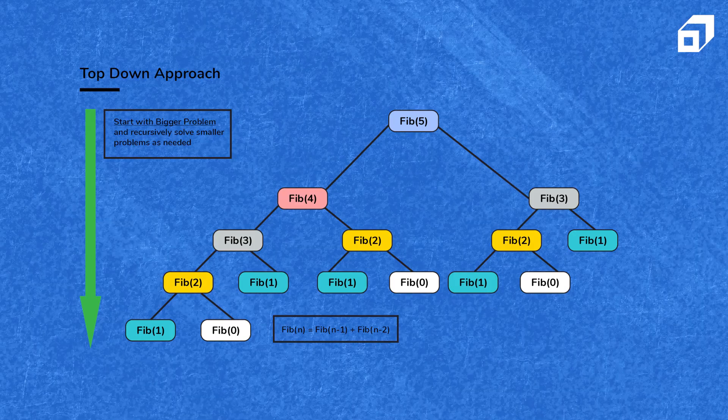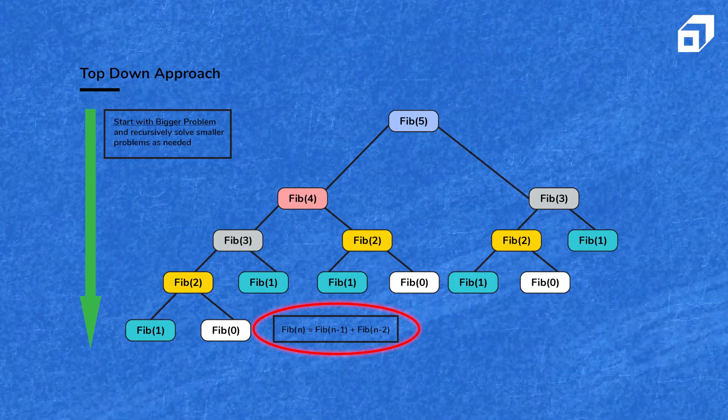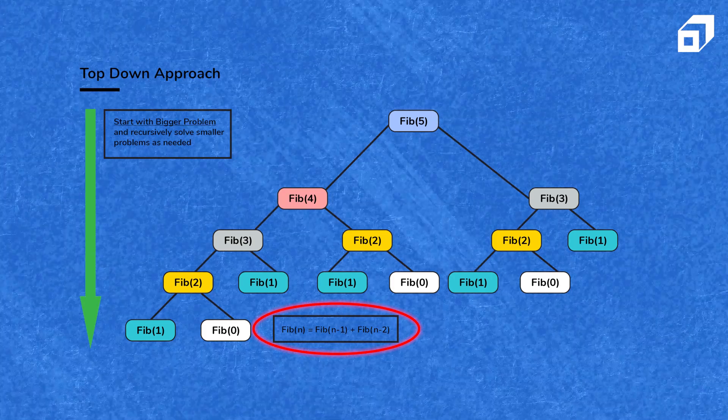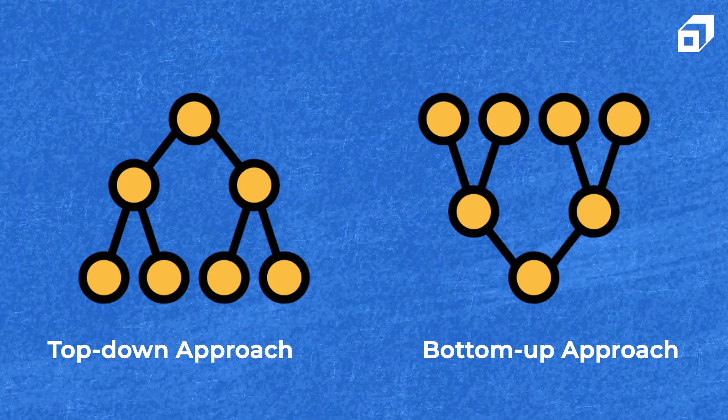The second most important topic is dynamic programming. It is similar to recursion, but here we exploit the overlapping subproblem structure of the original problem. We identify those overlapping subproblems, solve them, and build up to the larger solution. Make sure you understand memoization, tabulation, and both bottom-up and top-down approaches while practicing dynamic programming.